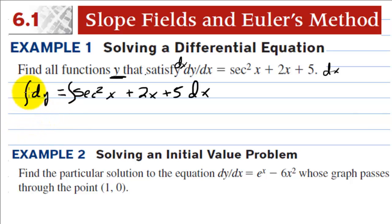So we have dy equals secant squared x plus 2x plus 5 dx. And then we're going to integrate both sides to find y. We're going to find all functions y that satisfy this condition. So the integral of 1 is y because we're integrating with respect to y. And this is tangent of x plus x squared plus 5x. We want all the functions whose derivative is secant squared plus 2x plus 5, so we can have a constant on the end. So we need plus C.